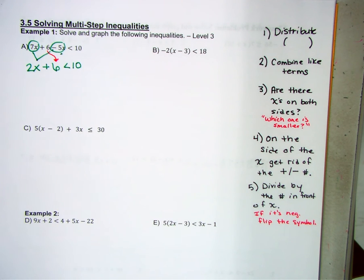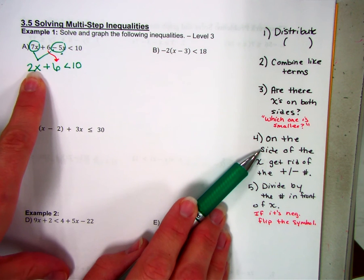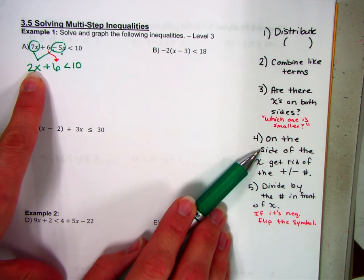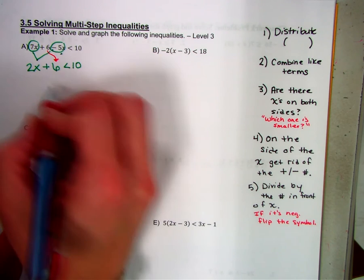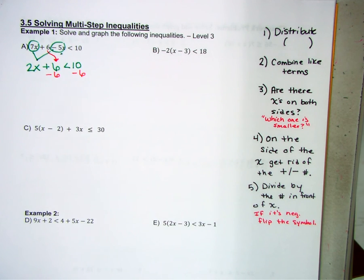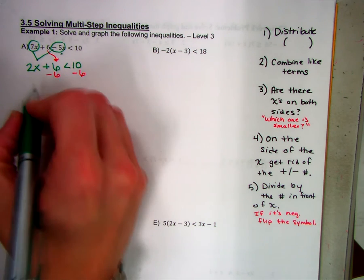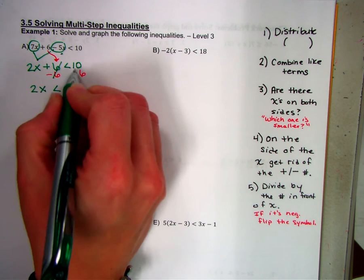Finish it up with less than 10. Do I have x's on both sides? No. So because I don't have x's on both sides, I skip over that step and I go to the next one. So the next one says on the side of the x, that's this one, on the side of the x, get rid of the plus or minus number. So it says plus 6. So I'm going to get rid of the plus 6. By doing the opposite. Here's where you start doing the opposite. So 2x.